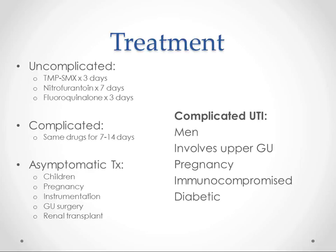For uncomplicated UTIs, we're going to use Bactrim in a lot of cases, sometimes nitrofurantoin, and sometimes fluoroquinolones. A lot of people think of ciprofloxacin as a go-to for UTI, but recommendations say to hold off on those unless you think there is involvement of the upper genitourinary system, or if you have reason to believe there's resistance to Bactrim or nitrofurantoin — because you want to avoid getting bugs resistant to quinolones.